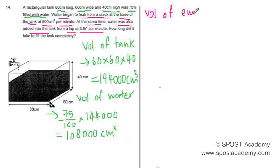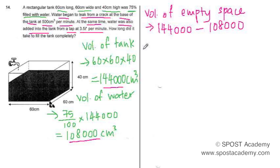So volume of empty space to be filled is actually the volume of the tank which is 144,000 minus the volume of water that is already inside. And we will get 36,000 cm³.